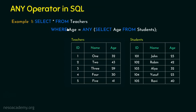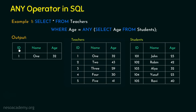The inner subquery is executed first on the students table, returning all age values: 23, 42, 32, 23, and 40 — five values total. Now for each row in the teachers table, the condition is validated against these values.